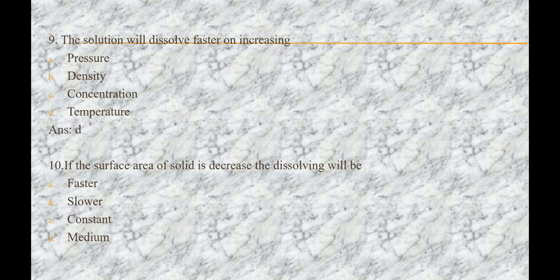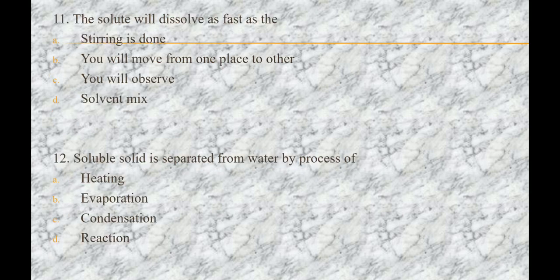Next question is: if the surface area of a solid decreases, the dissolving will be — options are: A) faster, B) slower, C) constant, D) medium. The answer is B, that is slower. Next question is: the solute will dissolve as fast as — options are: A) stirring is done, B) you will move from one place to another, C) you will observe, D) solvent mix. The answer is option A, that is stirring is done.